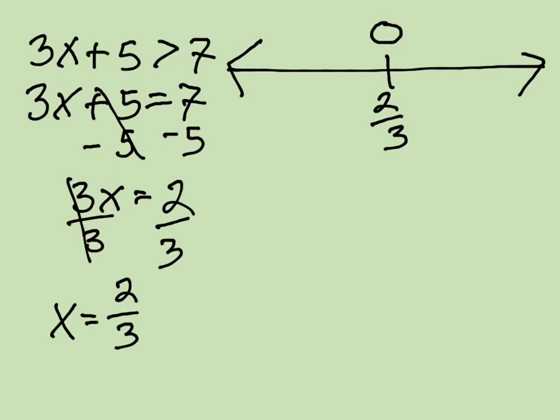So an easy number is zero. In this case, zero is less than our 2 thirds. And then we want to pick a number that is greater than 2 thirds. An easy number in this case is 1, but you could pick 10,000 if you wanted. Any number that is greater than the 2 thirds would work. Now those two points are called test points, and the reason they're called test points is we're going to use them to test whether it is true or false on that side.